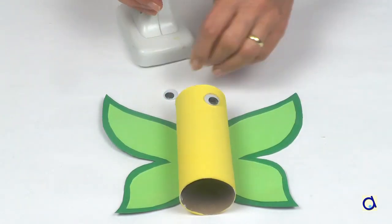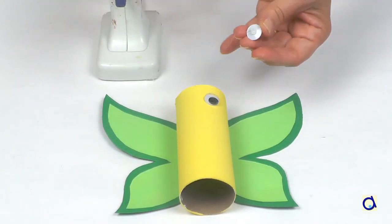Start by gluing two googly eyes near the top of the tube with hot glue or white glue.